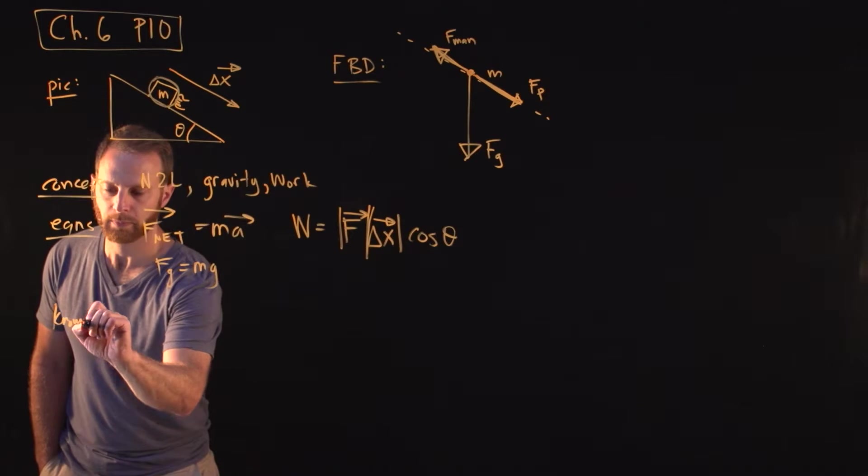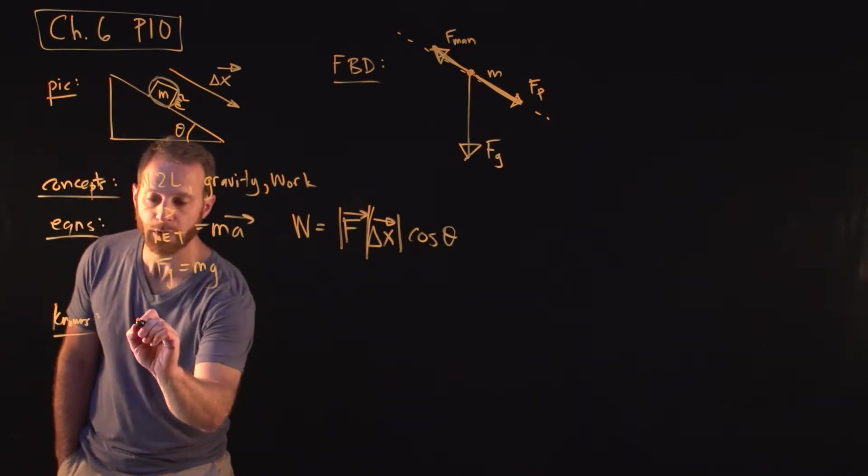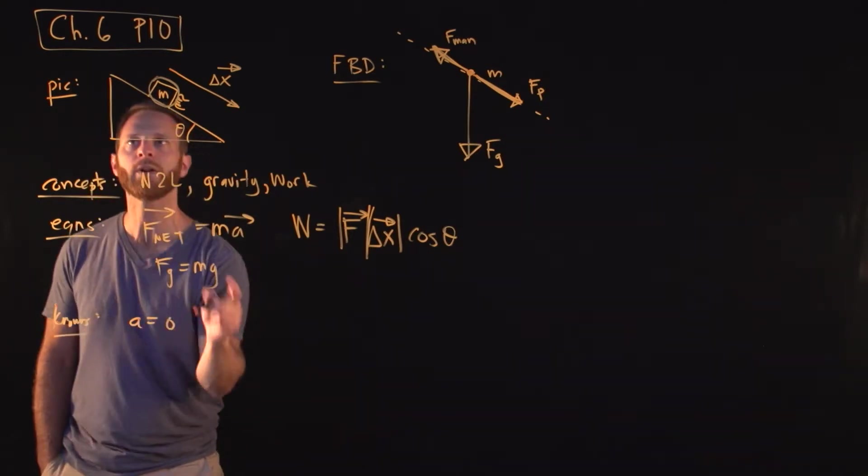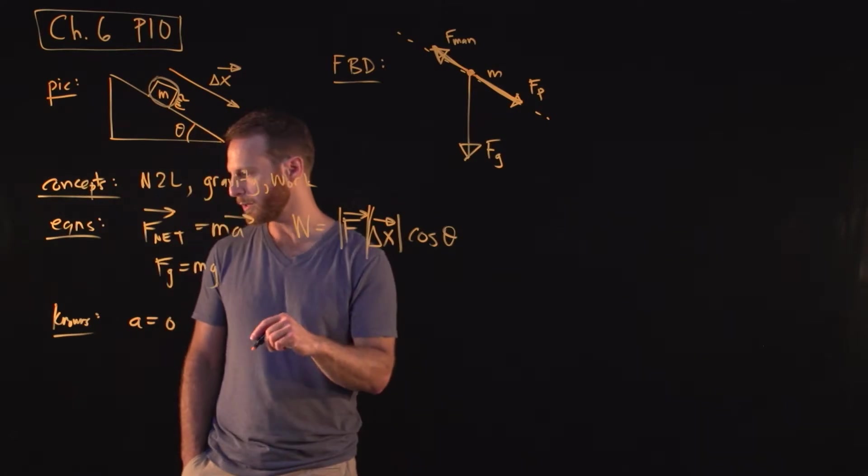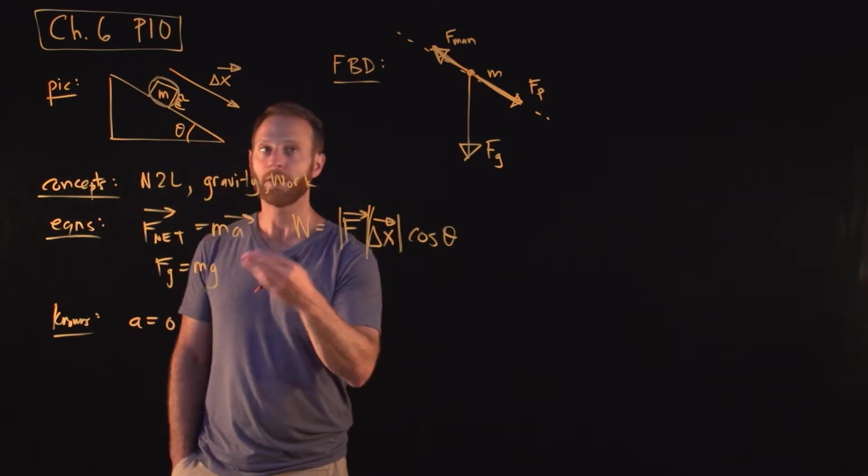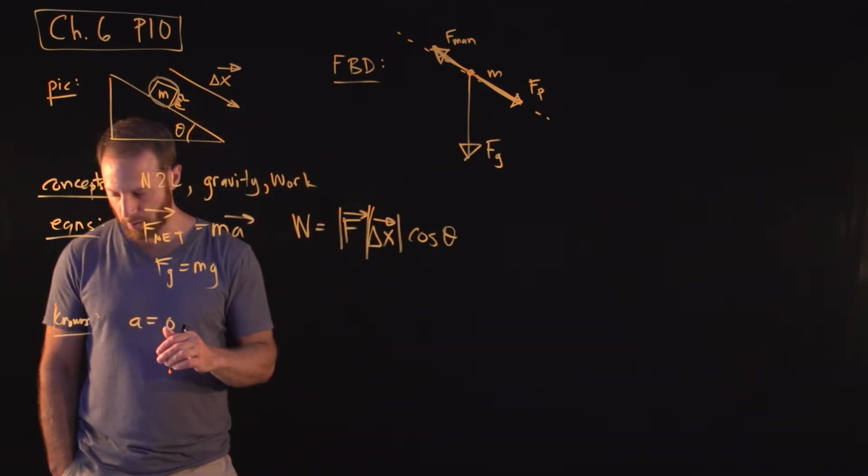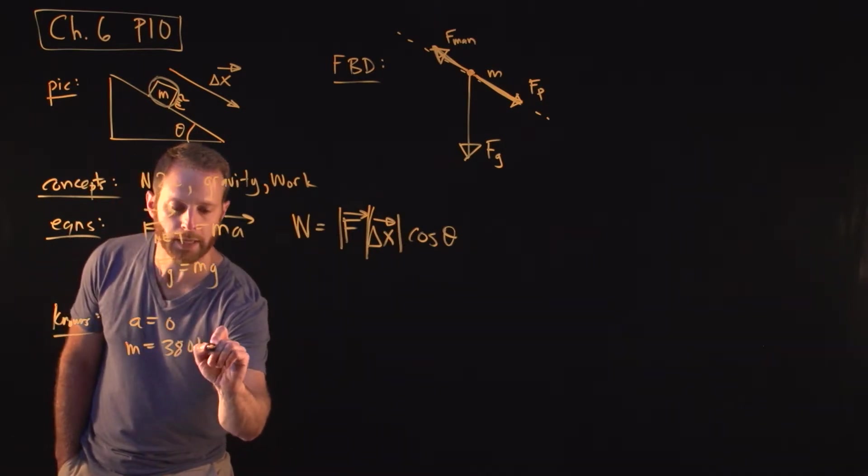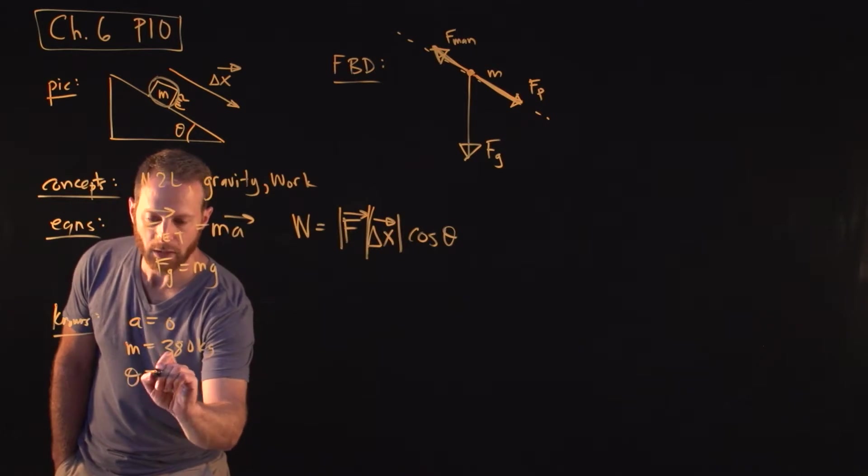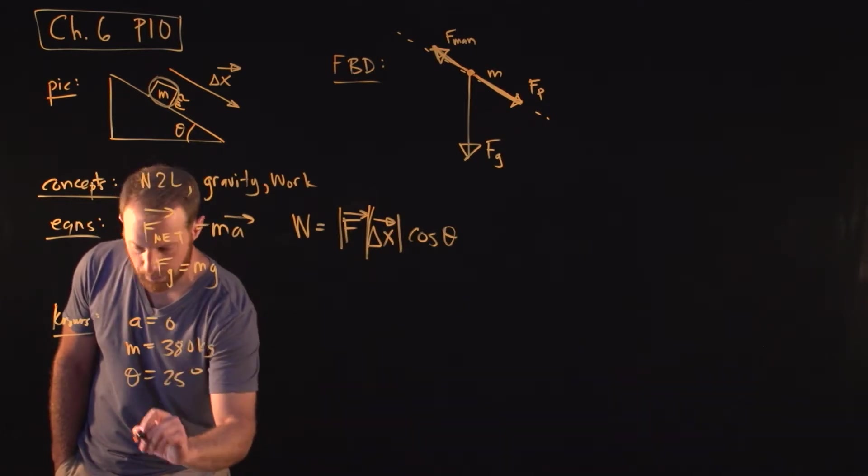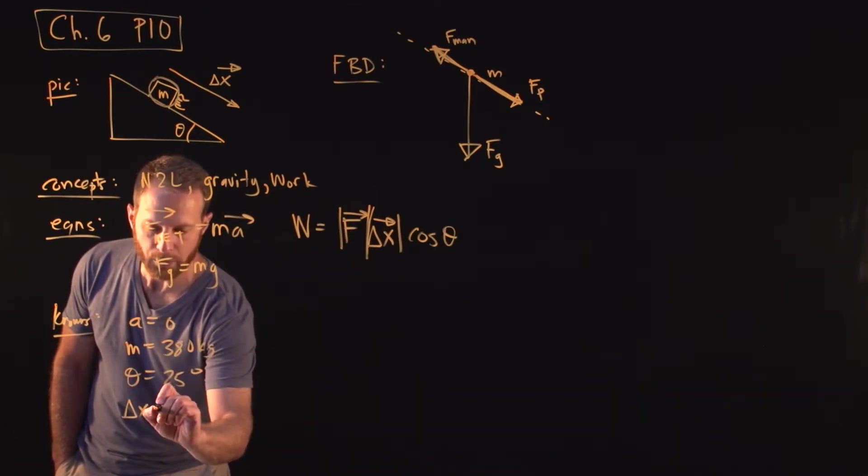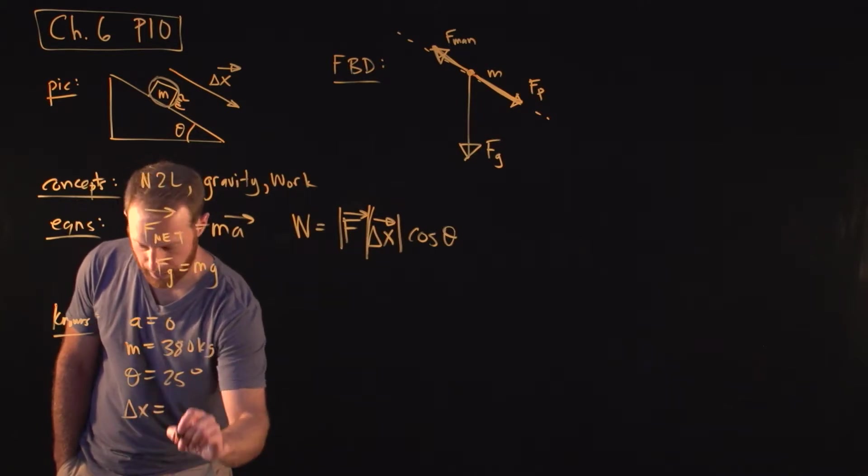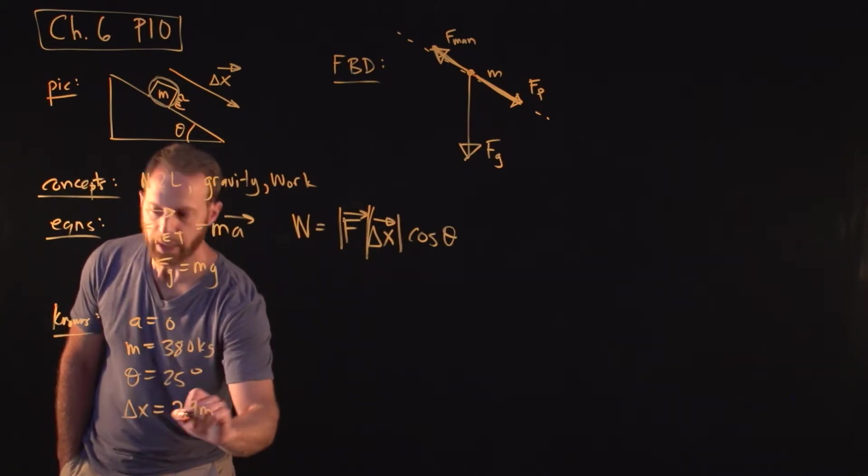Knowns: Let's see, we know that the acceleration is zero. We know that because in the language it's told us - they tell us that the guy is keeping the piano from accelerating, so A is zero. The mass of the object, the piano, is 380 kilograms. The angle of the incline is 25 degrees. And the displacement's magnitude is 2.9 meters.